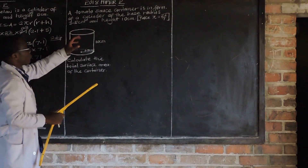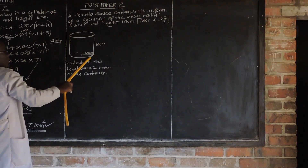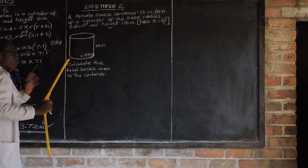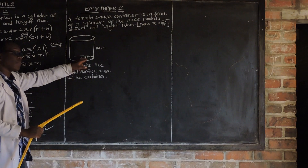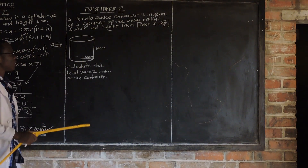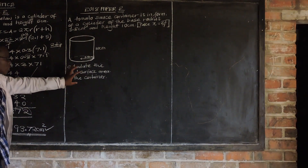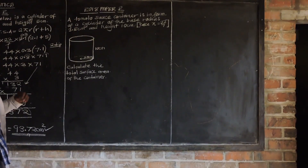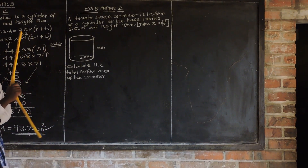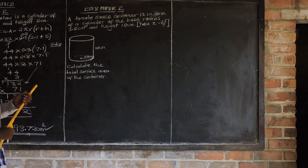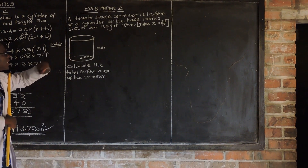This tomato sauce container is in the form of a cylinder. The base radius of this container is 3.5, the height is 10 centimeters, and you're being told to find the total surface area, taking pi to be 22 over 7. So let us find the total surface area of this container.